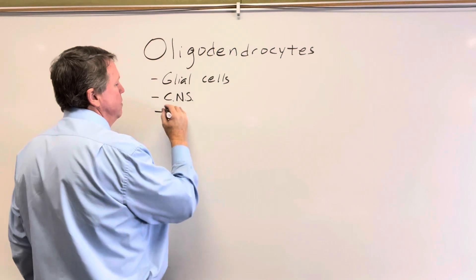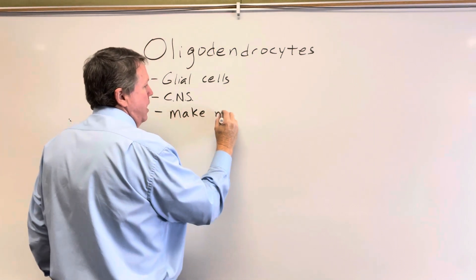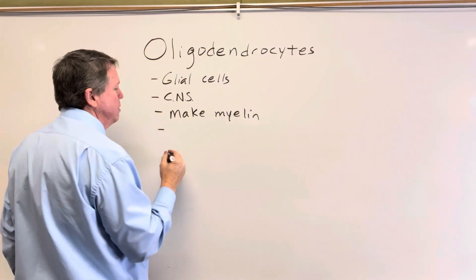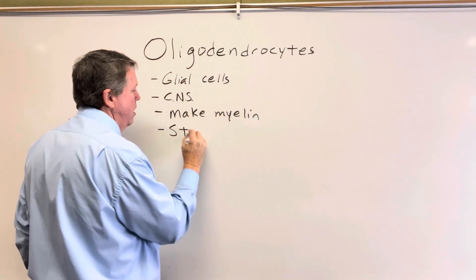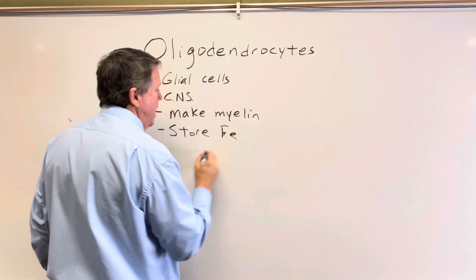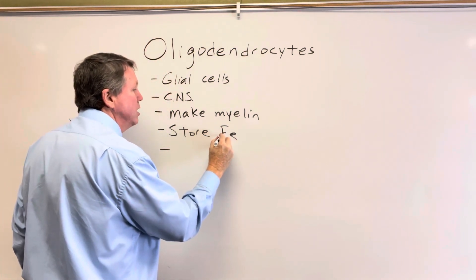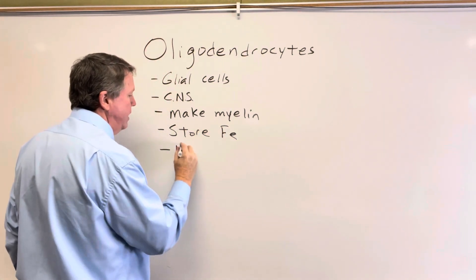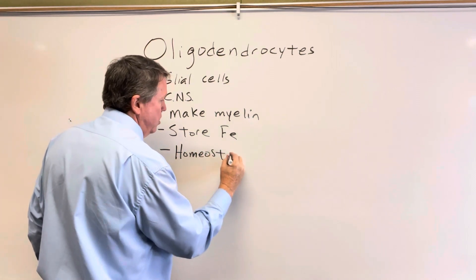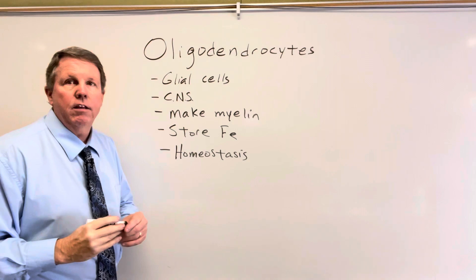Oligodendrocytes are responsible for making myelin. They're also going to store iron and be responsible for maintaining homeostasis. So let's go ahead and jump in and take a look at this.